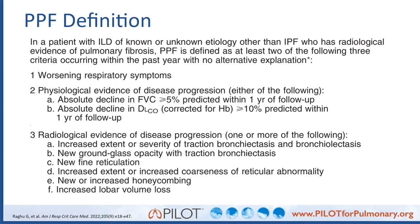It's important to highlight that you must rule out an alternative explanation. A patient may have worsening respiratory symptoms and an absolute decline in DLCO of over 10% in the last year, and yet not have PPF — for example, if they've developed pulmonary hypertension. So it's key that we evaluate for all alternative explanations when applying this definition.